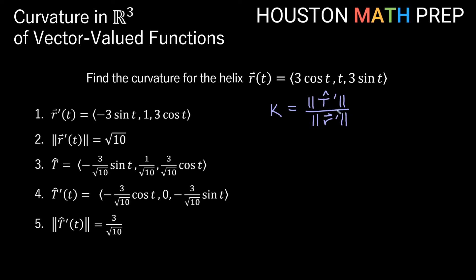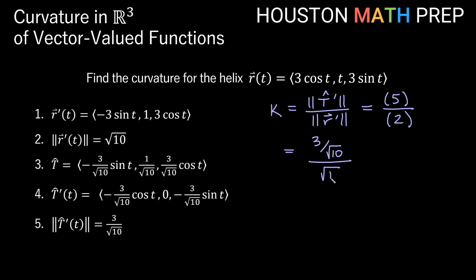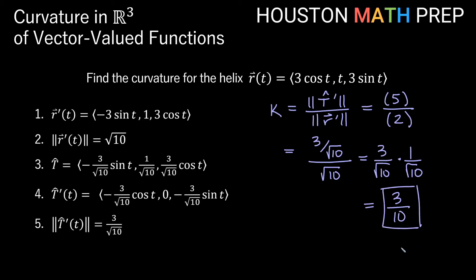Remember, the magnitude of T̂-prime is not guaranteed to be one — the magnitude of T̂ is, but not T̂-prime. So we take the last magnitude found (step five in our list) and divide it by the first magnitude found (step two). In other words, we take 3 over root 10 and divide it by the magnitude of r-prime of t, which is root 10 — that's 3 over root 10 times 1 over root 10. This gives us a curvature of 3 over 10 for this helix.